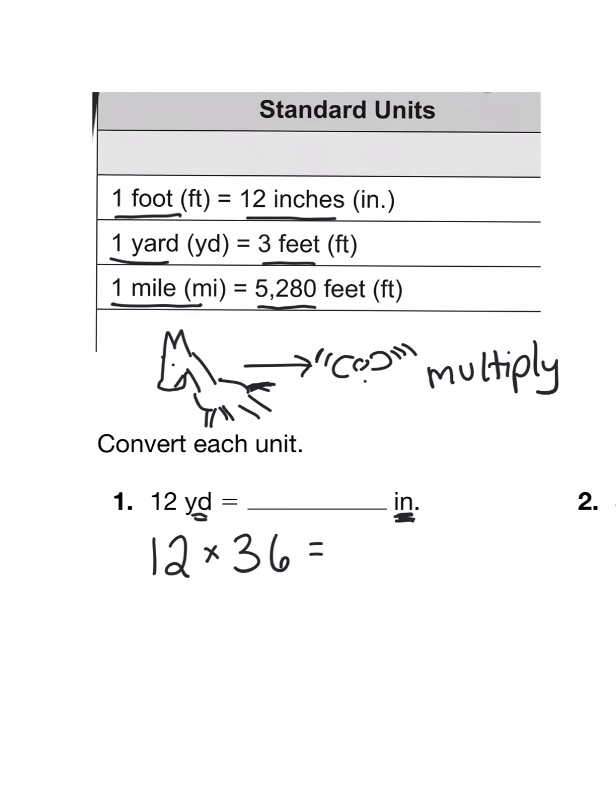We're going to take our 12 yards and multiply that times 36 inches in a yard. Now you might be wondering, Miss Lynn, how do you know that there are 36 inches in a yard? So to show you that I'm going to draw a quick model. Here I have a rectangle and the rectangle represents one yard. Now up here in my conversion chart it tells me that there are three feet in a yard. So I'm going to show that. Here's one, two, three feet in my yard. So this is one foot, this is another foot, and this is a third foot.